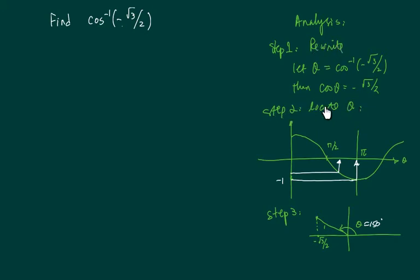Step number 2 says that we're going to locate theta. Now knowing the cosine theta is minus radical 3 over 2, we're going to draw the cosine curve. Inverse of cosine is defined between 0 and pi, and that's a pretty important piece of information.